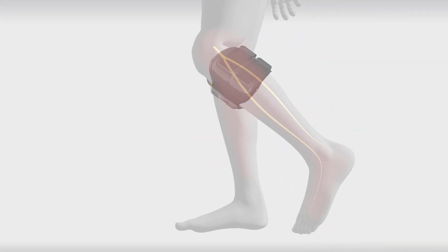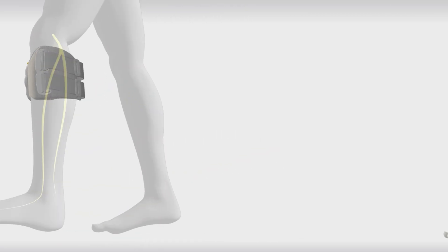The lower cuff activates the dorsiflexors and diverters, which enables foot clearance during swing.